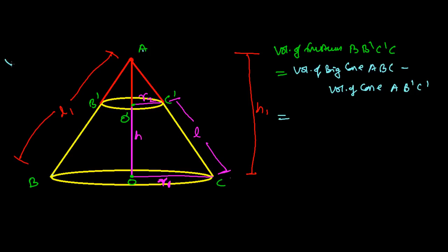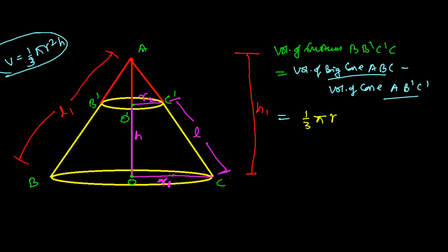The volume of a cone is (1/3)πr²h. Applying this formula to the big cone, the volume is (1/3)π r1² h1. For the smaller cone, the radius is r2, so the volume is (1/3)π r2² times the height of the small cone.